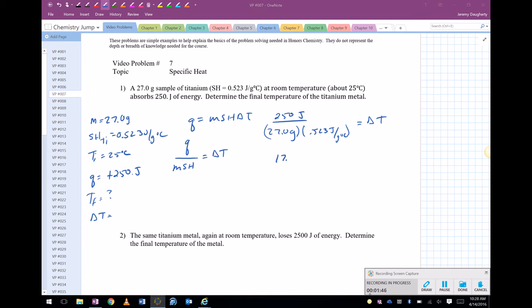So I get 17.70. That's my delta T. Should probably have three sig figs, so let's go right there. But I want to know the actual final temperature, so delta T is equal to temperature final minus temperature initial. So 17.7 is equal to temperature final minus 25. So I'm going to add 25 to both sides. 42.7. So there's the final temperature.